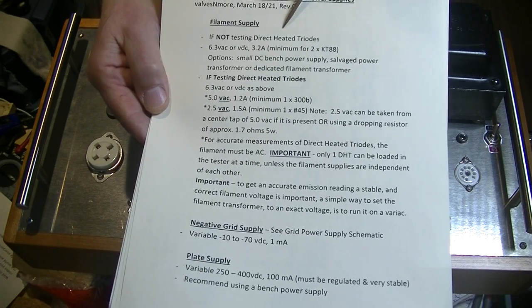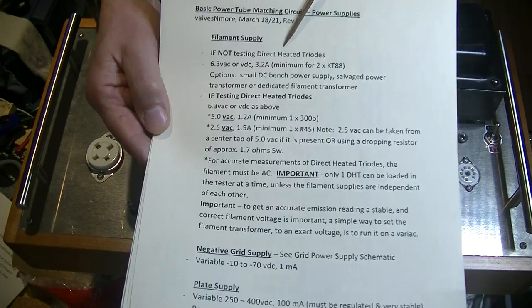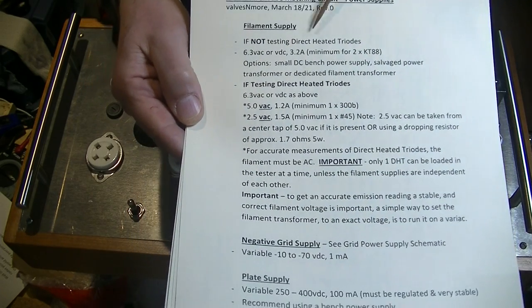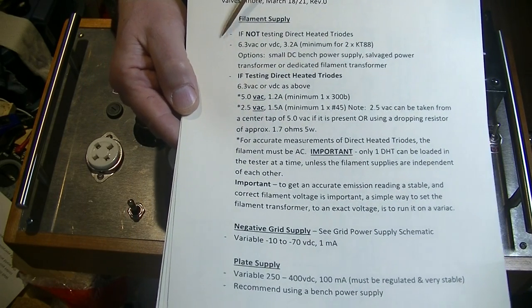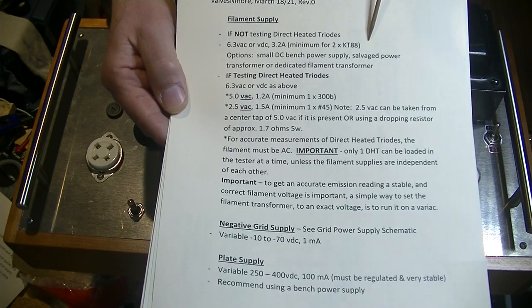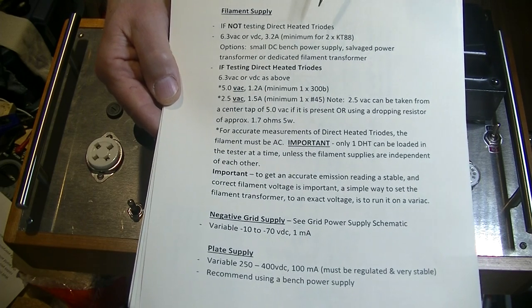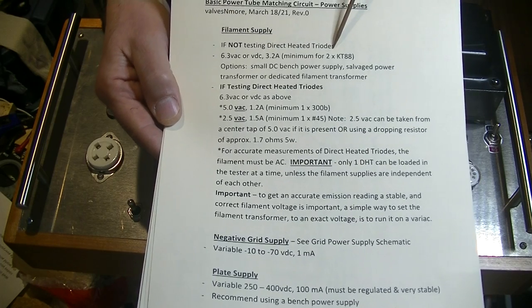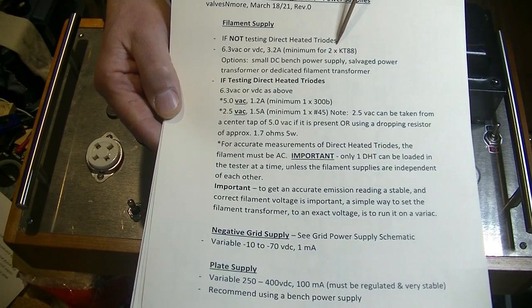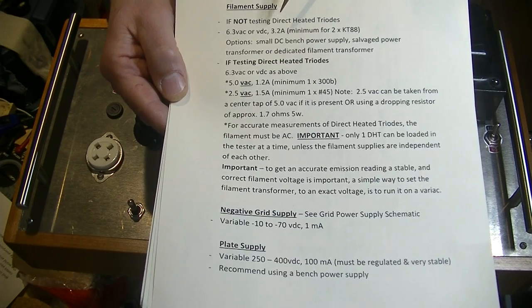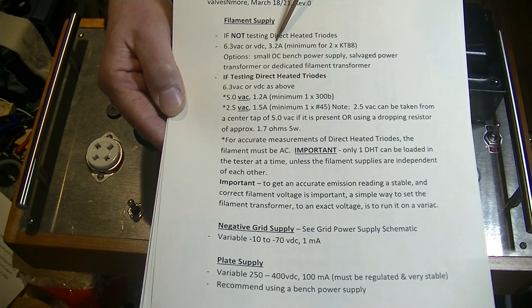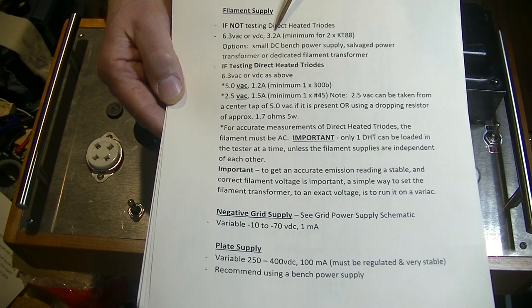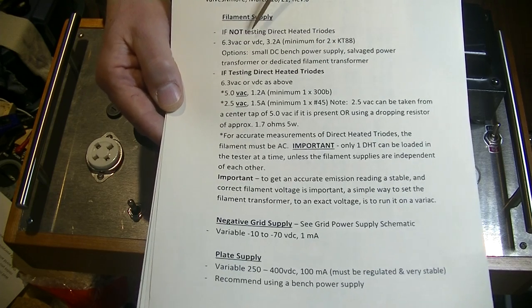So if you're not going to test direct heated triodes like the 300B, then the filament supply is dead easy and I've outlined it here for you. Now I've got the requirements for two tubes loaded into the tester the way I've set my tester up. Obviously if you do one tube you can have the amperage requirements. And if you do a quad, you're going to double it.